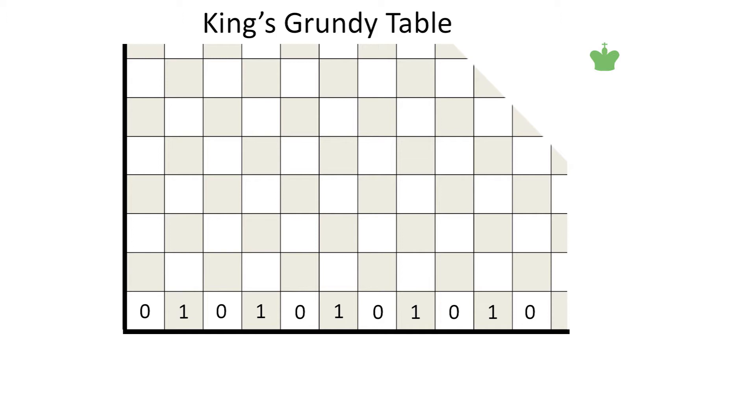Just as we've worked our way along the bottom row, we can similarly work our way up the leftmost column. These Grundy numbers also alternate between 0 and 1. The numbers going up the leftmost column are symmetric across the blue diagonal with those on the bottom row.